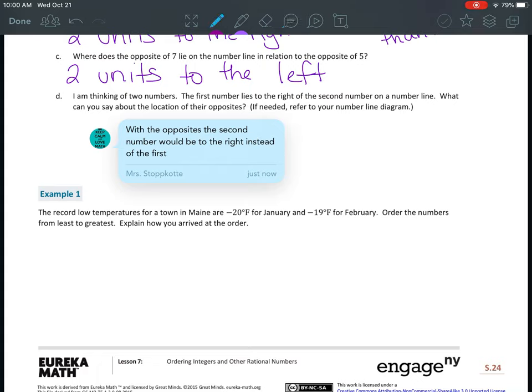All right, example 1. The record low temperatures for a town in Maine are negative 20 degrees Fahrenheit for January and negative 19 degrees Fahrenheit for February. Order the numbers from least to greatest. Explain how you arrived at your answer. Okay, so what I'm going to think about, this is Fahrenheit. So if I were looking at a thermometer, it would look like this.